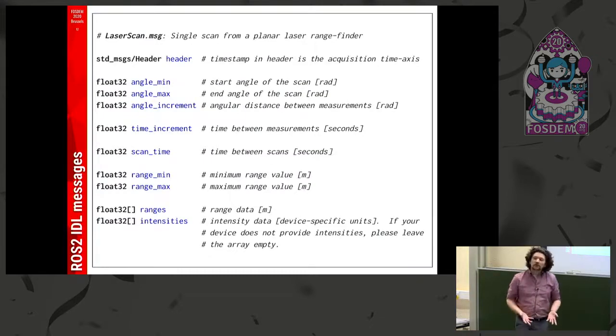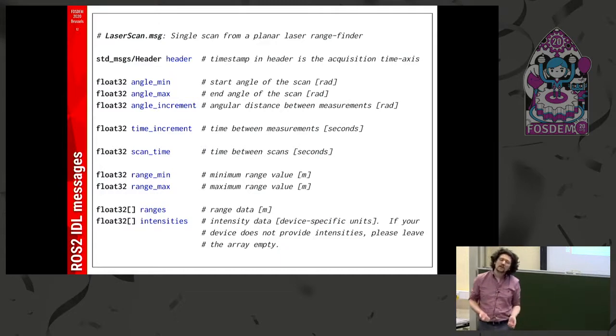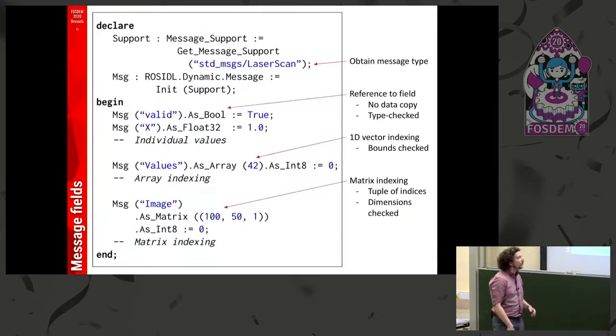And what information travels through those topics? Essentially, there is a way to define data types with text files, which get translated into records. And these records can be used to create new records. So it's basically the same thing that we do in all languages, but starting from a textual description. And now, moving a bit into how this looks in Ada.